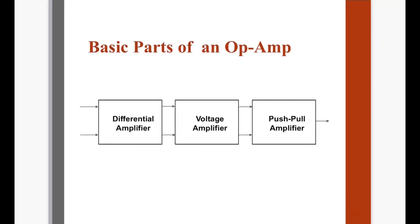Pag tinignan natin yung basic parts ng op-amp, it has three basic parts. Sa input side, meron siyang differential amplifier — it amplifies the difference of the two signals sa input, kasi dalawa yung input natin sa isang op-amp. Then on the second stage, meron siyang voltage amplifier, which is usually Class A, whose purpose is just to increase the gain of the amplifier since kailangan nga sa isang op-amp is very high voltage gain. And on the last stage or the output stage, we have the push-pull amplifier, which gives us the low output impedance, with one output.